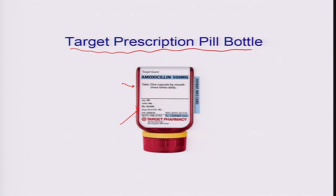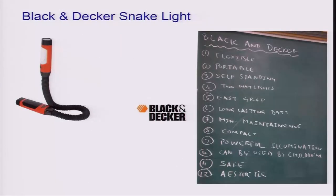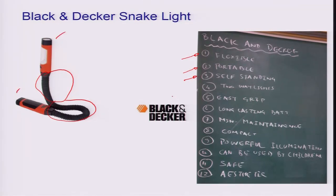Our student responses for these three products: for the first product — the snake light — students responded by saying it is flexible and portable, self-standing, so all the wires can be moved around in any part and it may be made to stand on its own. There are two-way lights, easy grip, long-lasting batteries, probably minimum maintenance, quite compact, powerful illumination, can be used by children as well, very safe and aesthetically pleasant.